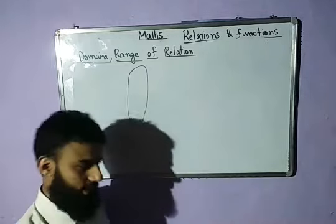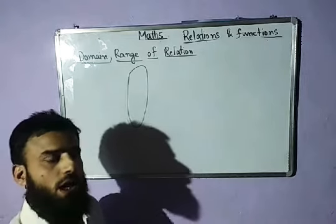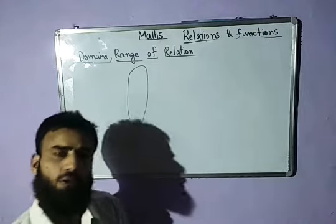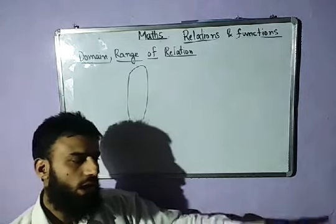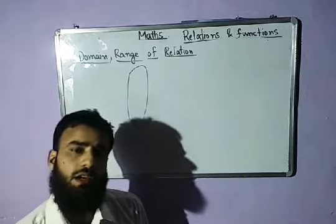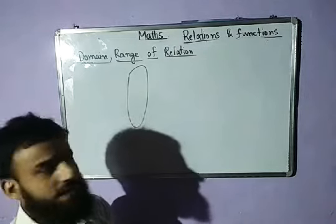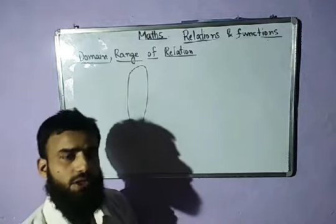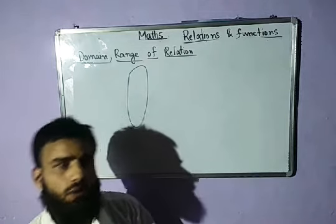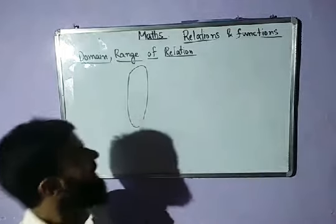Previously I discussed ordered pairs — a pair of elements when listed in a specific order makes an ordered pair. Then I talked about the equality of ordered pairs, then the Cartesian product of two sets, and then we discussed relation: what is a relation? A relation is simply a subset of A cross B. We also discussed the representations of a relation — roster form, set-builder form, and arrow diagram.